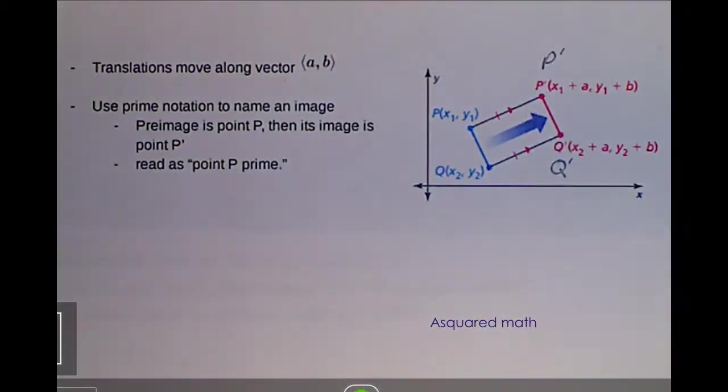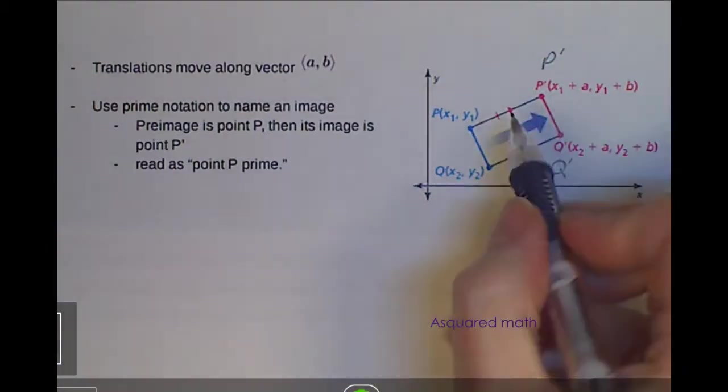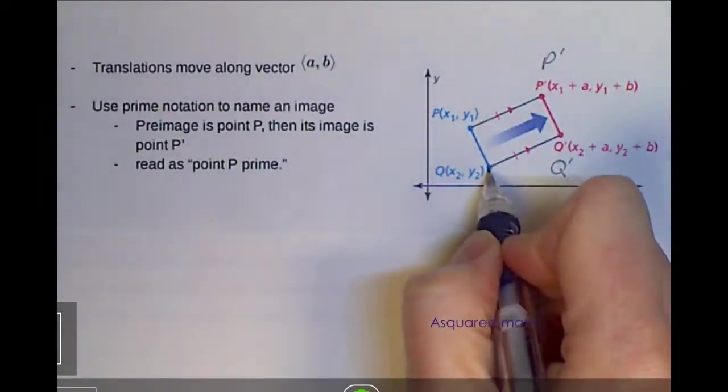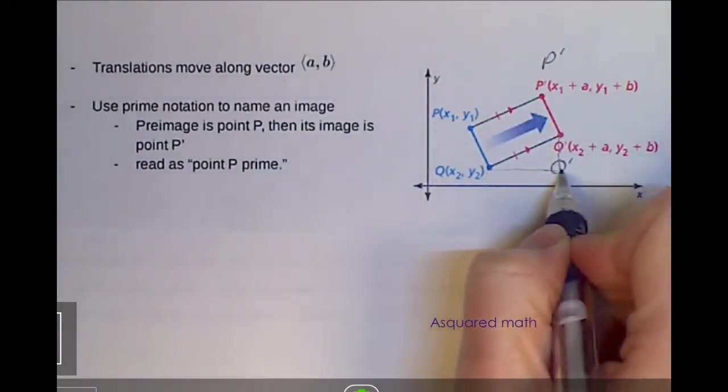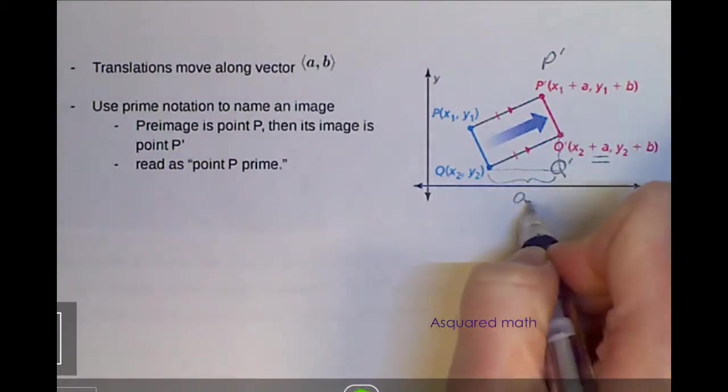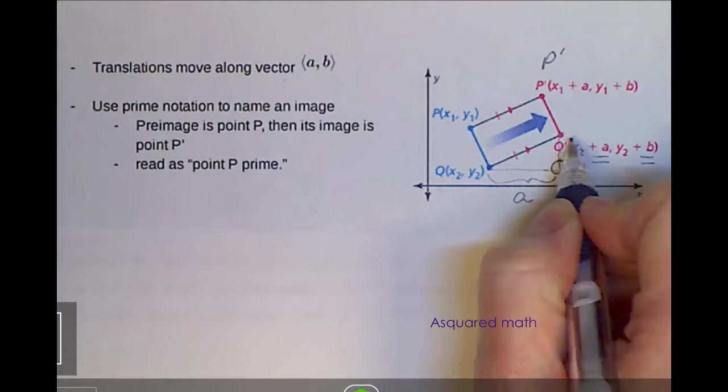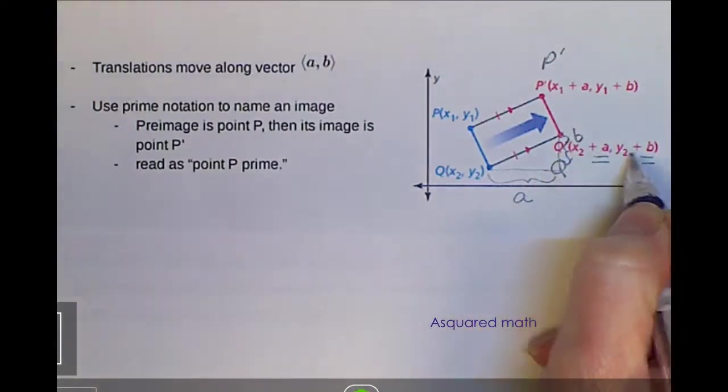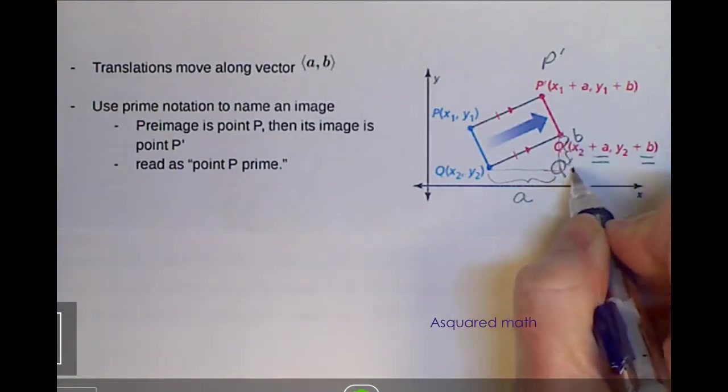If we take a look at this, if we break this up into component form, we move this a distance of A to the right. And then B, we're going up a distance of, or I'm sorry, for our Y, going up a distance of B.